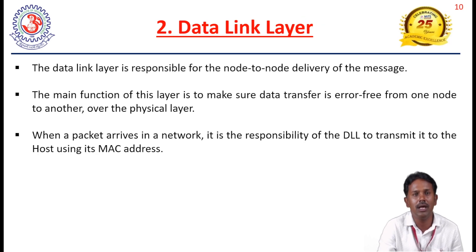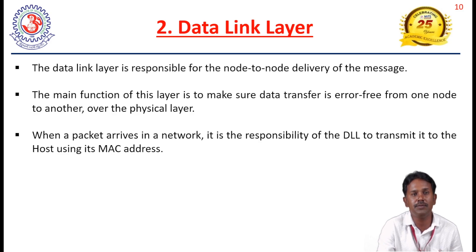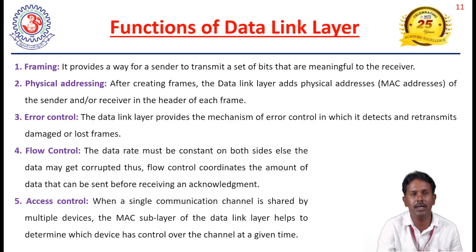The next layer is the data link layer. Whatever data is received from the physical layer is sent to the data link layer, which is responsible for node-to-node delivery of the message. The main function is error-free transfer of data from source to destination. The data link layer has two sub-layers: the Logical Link Control layer and the MAC — Medium Access Control — layer. The functions of the data link layer are: framing, physical addressing, error control, flow control, and access control.